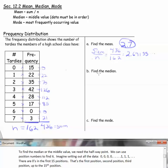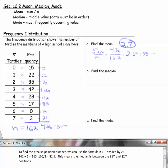Now the median. To find the median, or the middle value, we need to know where the halfway point is. We can use position numbers to find it. Imagine writing out all this data: 0, 0, 0, 0, 1, 1, 1, 1. In the first 15 positions, there are zeros. The first position, second position, third position, up to the 15th position.